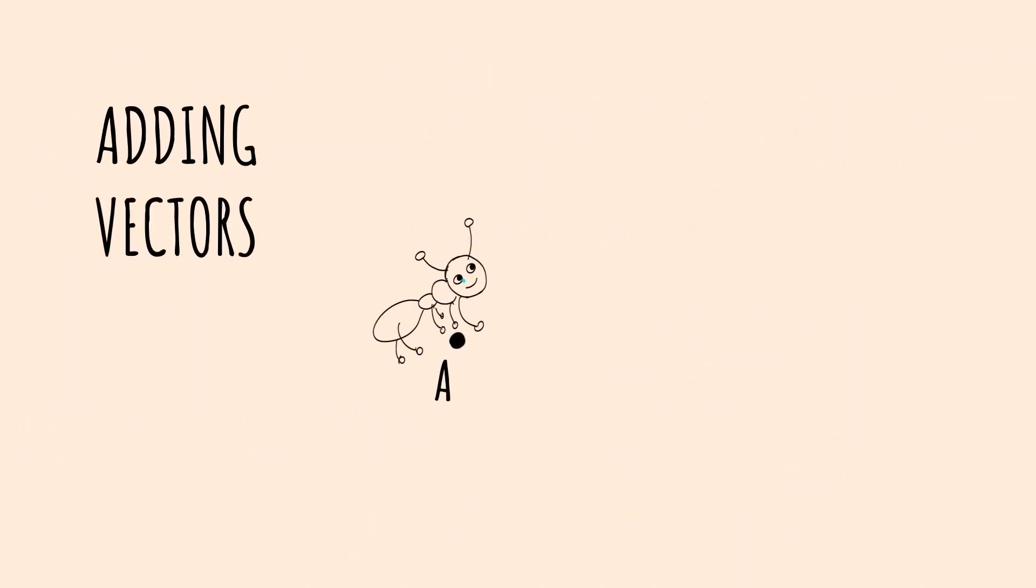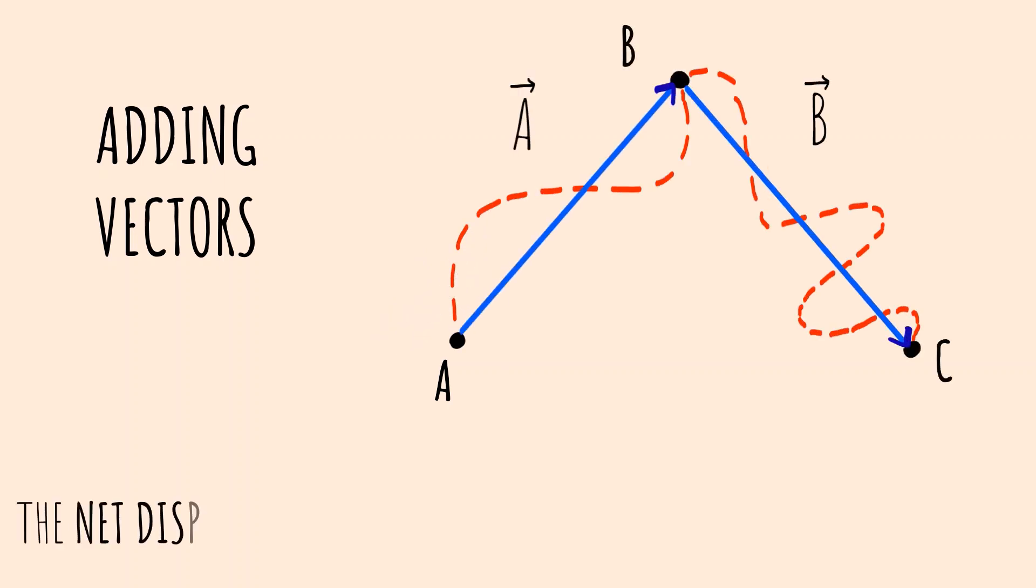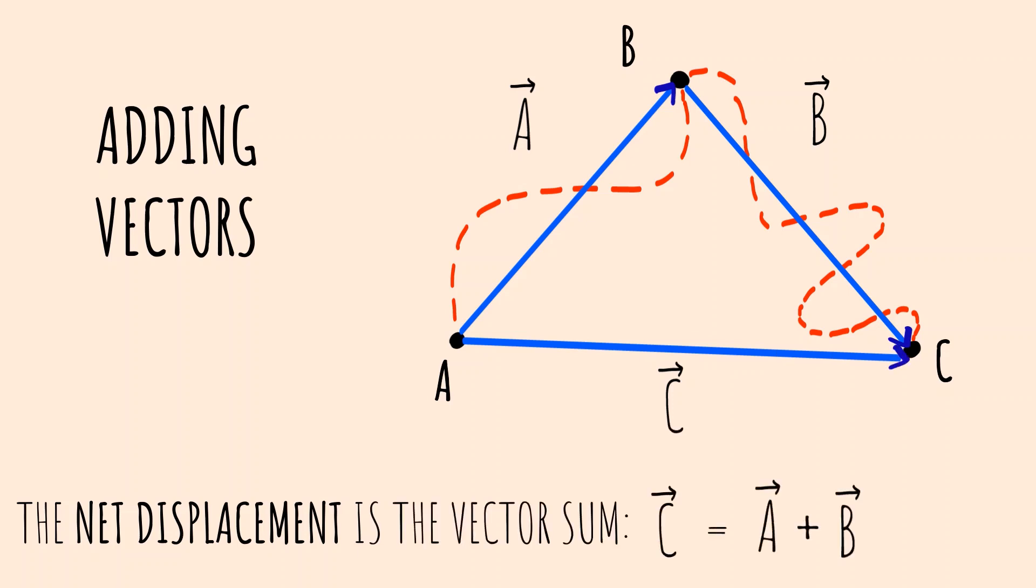Vectors follow different rules of addition. Suppose an ant walks from point A to point C via point B. Then the net displacement given by vector C can be obtained by adding vectors A and B.